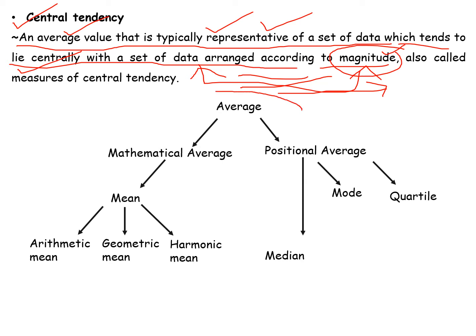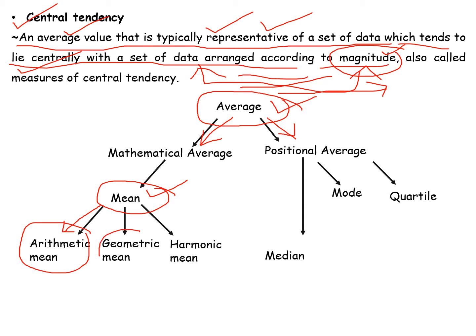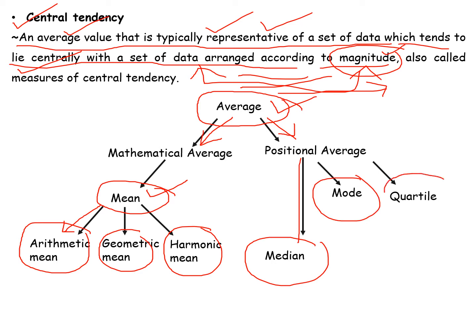Central tendency is a kind of average. Those averages are divided into two parts: the mathematical average and the positional average. The mathematical average is the mean, which is further divided into three parts: arithmetic mean, geometric mean, and harmonic mean. The positional average is divided into median, mode, and quartile. Where you can perform arithmetic operations, that gives rise to mathematical averages, while the positional average is fixed by position.